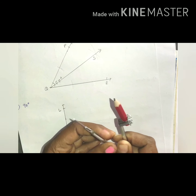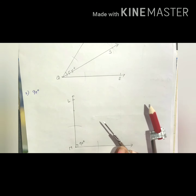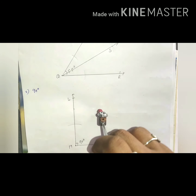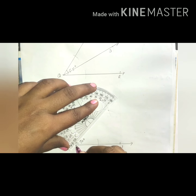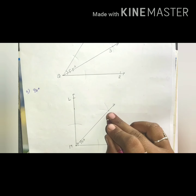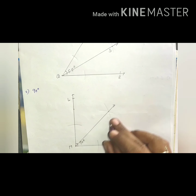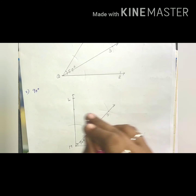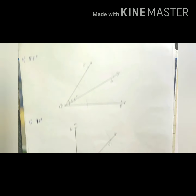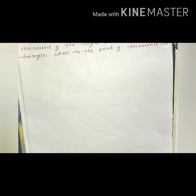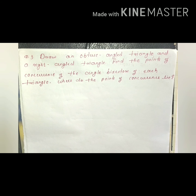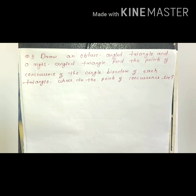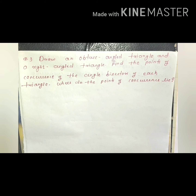Name the angle as ABC with a measure of 105 degrees. Keep the compass point at vertex B and make an arc on ray AB and ray BC. The arcs intersect the sides AB and BC. Then, placing the compass at each intersection point, extend the distance and make arcs — these arcs intersect at a new point. Join vertex B to this intersection point to get the angle bisector of angle ABC, named ray BD.